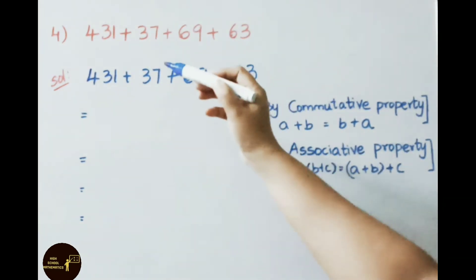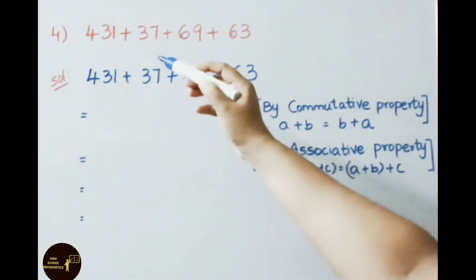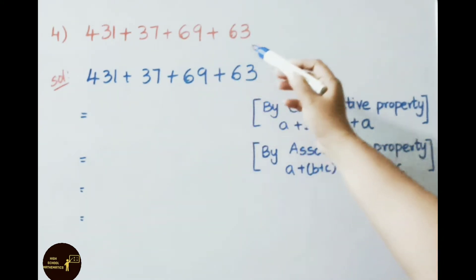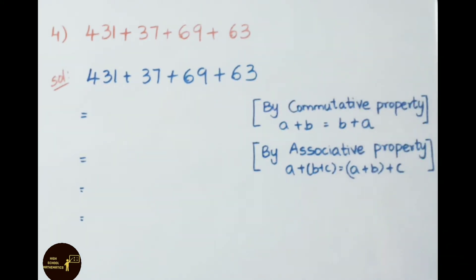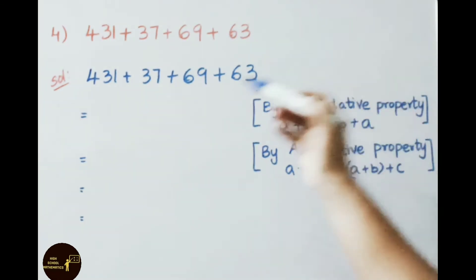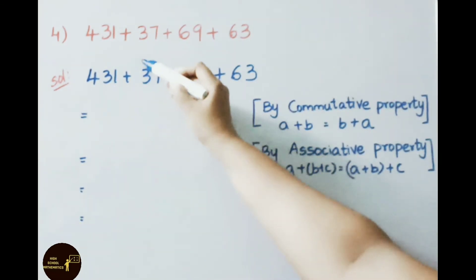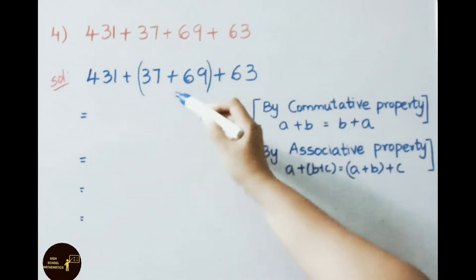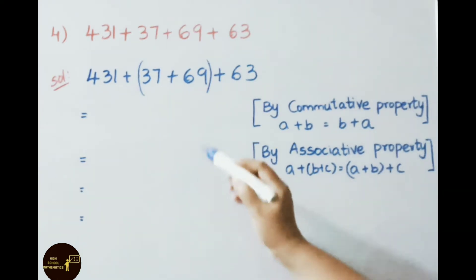See the fourth sum now: 431 plus 37 plus 69 plus 63. We shall solve this sum using the commutative and associative properties. We shall apply the commutative property for these two numbers: A plus B can be written as B plus A.